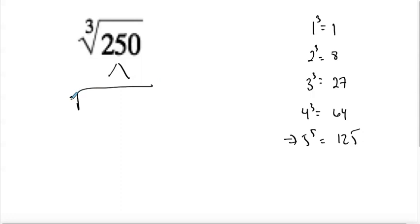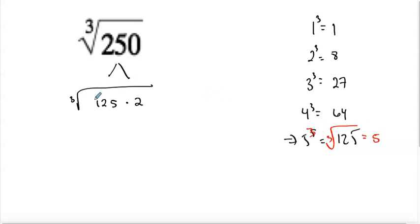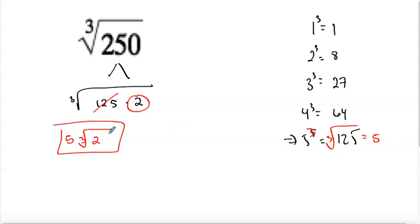So the cube root of 250 can be rewritten as the cube root of 125 times 2. The cube root of 125 is 5, because 5 times 5 times 5 is 125. So that comes out of the cube root, and I can't take the cube root of 2 so that's going to stay inside. So the answer is 5 times the cube root of 2.